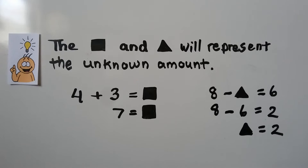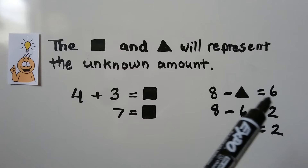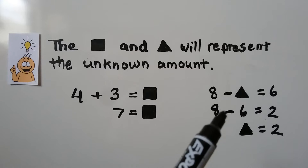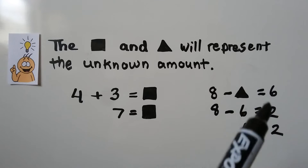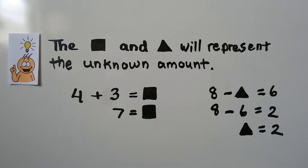So why are we using the black square and black triangle? The black square and black triangle represent an unknown amount. We can say 4 plus 3 is equal to a black square — we know 7 is equal to the black square. If we have 8 minus a black triangle is equal to 6, we could take the difference 6 and do 8 minus 6, which equals 2, so the black triangle is equal to 2. These are related facts. By understanding the concept of the black square and black triangle, it'll help you in the future when we start working with algebra.